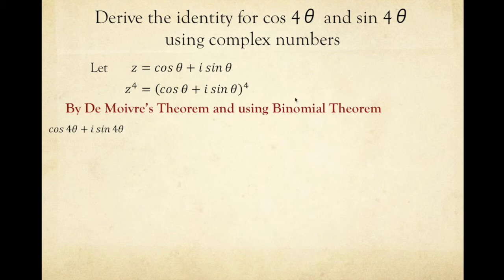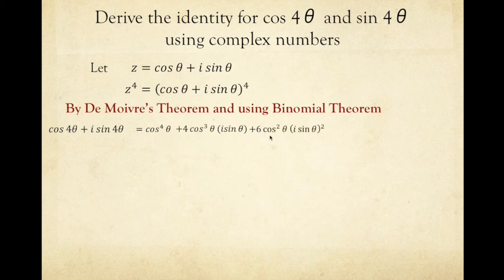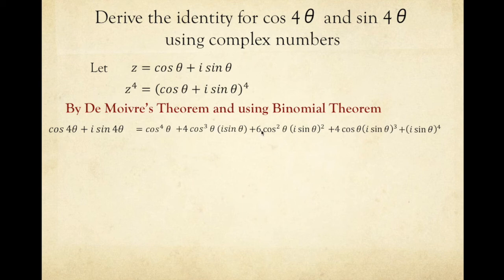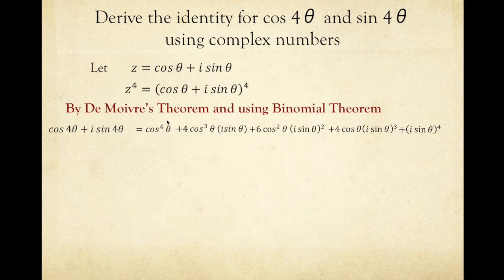Using the binomial theorem, the expansion equals cosine to the power of 4 theta, plus 4 cosine cubed theta times i sine theta, plus 6 cosine squared theta times i sine theta squared, plus 4 cosine theta times i sine theta cubed, plus i sine theta to the power of 4. The binomial coefficients correspond to 4C0, 4C1, 4C2, 4C3, and 4C4. The powers of cosine theta descend from 4 to 0, while the powers of i sine theta ascend from 0 to 4.